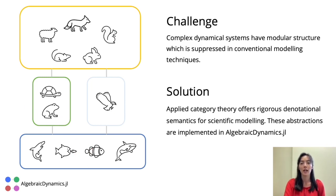However, this modular structure is often suppressed in conventional modeling techniques, and so can't be used for either model specification or analysis. Our solution is AlgebraicDynamics, which offers a rigorous denotational semantics for scientific modeling and is grounded in the mathematics of applied category theory.